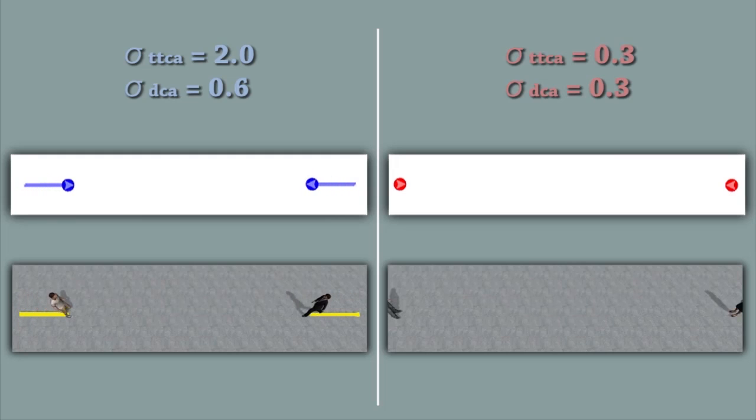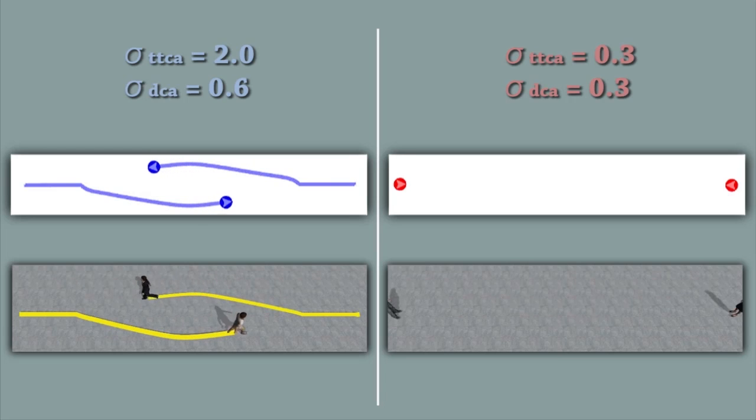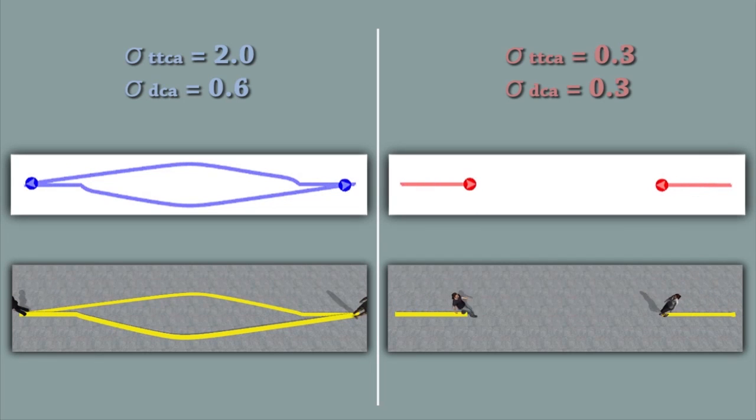Here, on the left, the parameter setting makes the agent adapt its movement early and keeps a large distance to the obstacles. On the right, using an opposite parameter setting, the agent adapts its movement later and keeps a smaller distance to the obstacles.